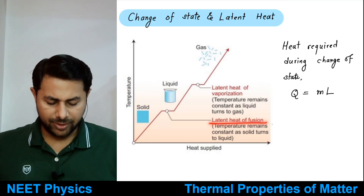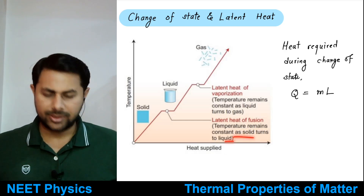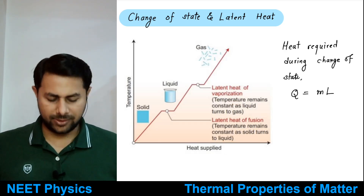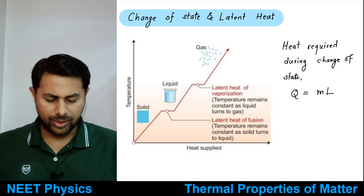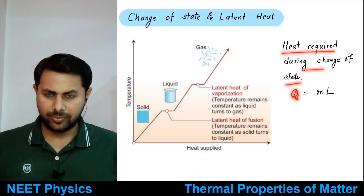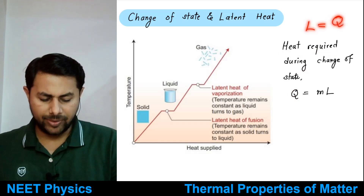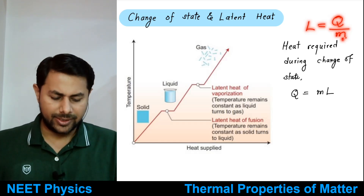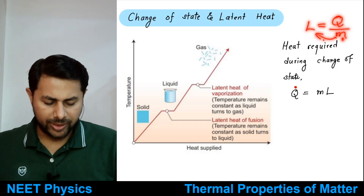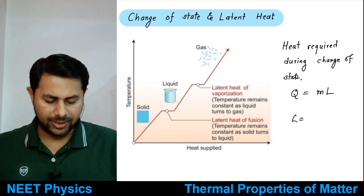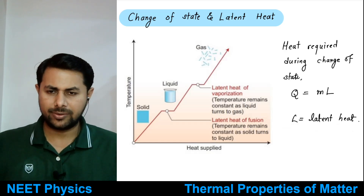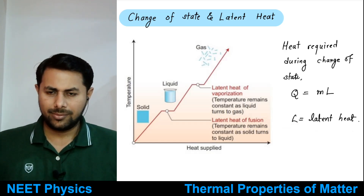The amount of energy required per unit mass to change the state is called latent heat. There are two types: latent heat of fusion (when solid turns to liquid) and latent heat of vaporization (when liquid converts to vapor/gas). The heat required during change of state is Q = m × L, where L is the latent heat.